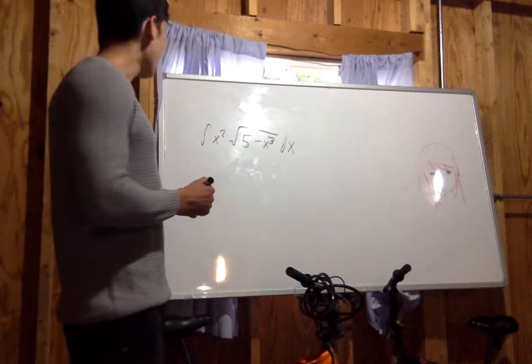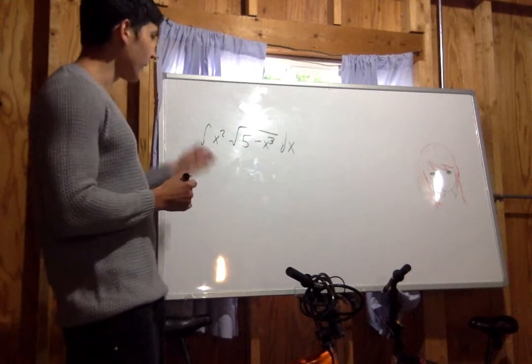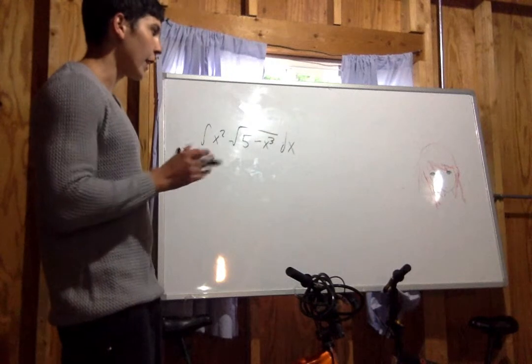I'm going to show you how to take the integral of x squared times the square root of 5 minus x cubed.